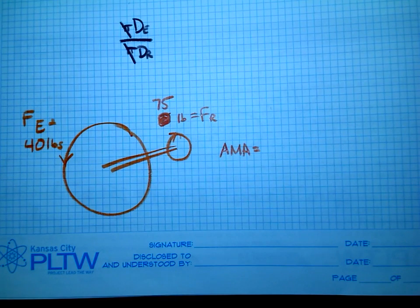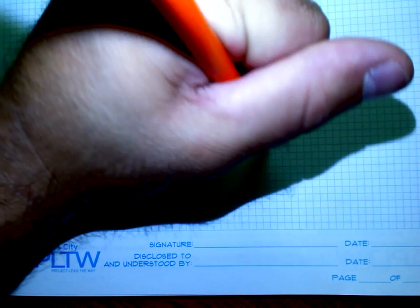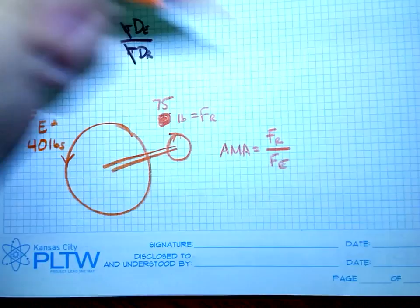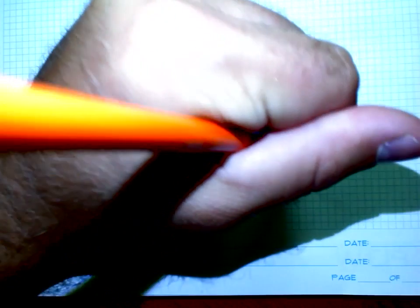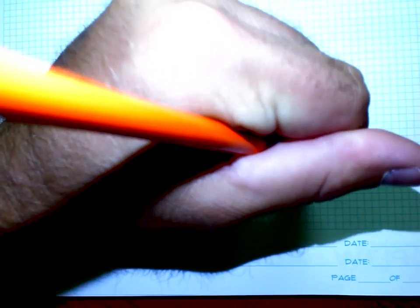Now, when I compare these two, it's going to be then the force that I got out over the force that I had to put in, resistance over effort. In this case, it's 75 over 40.